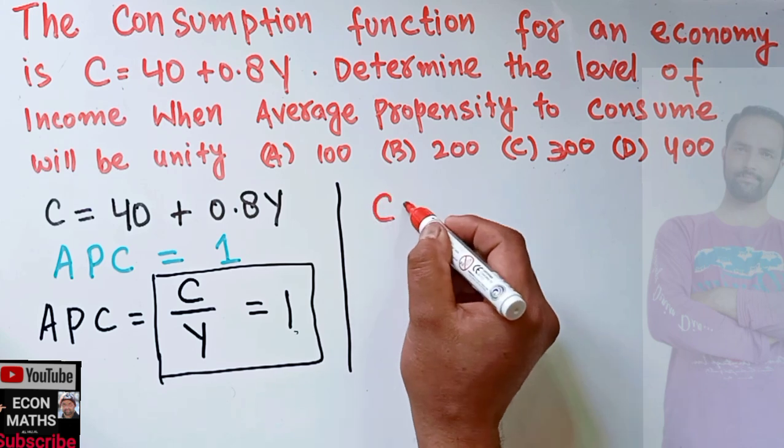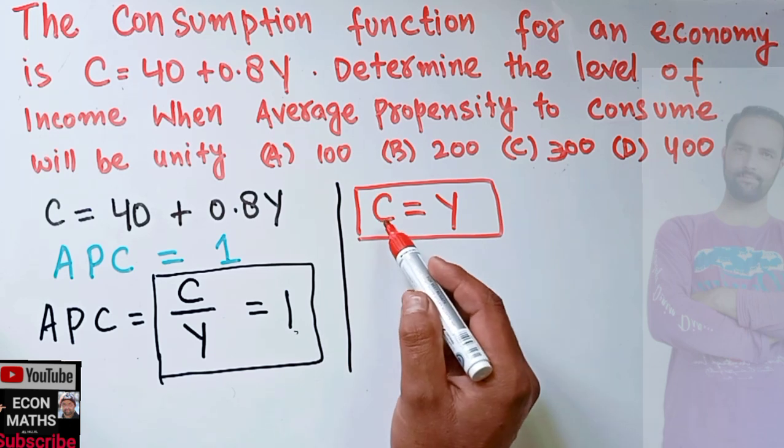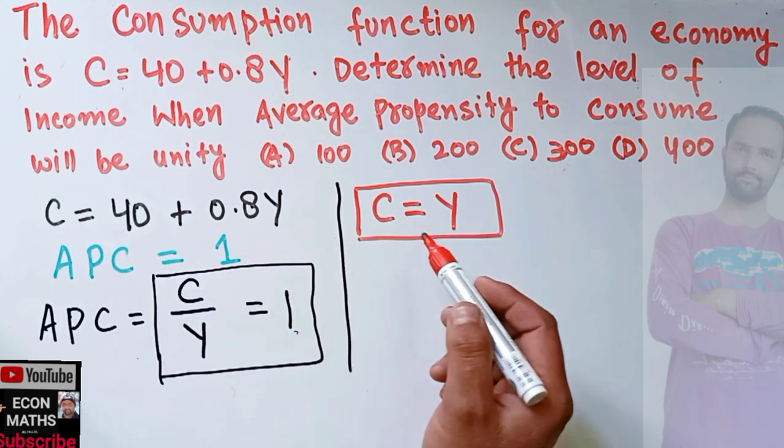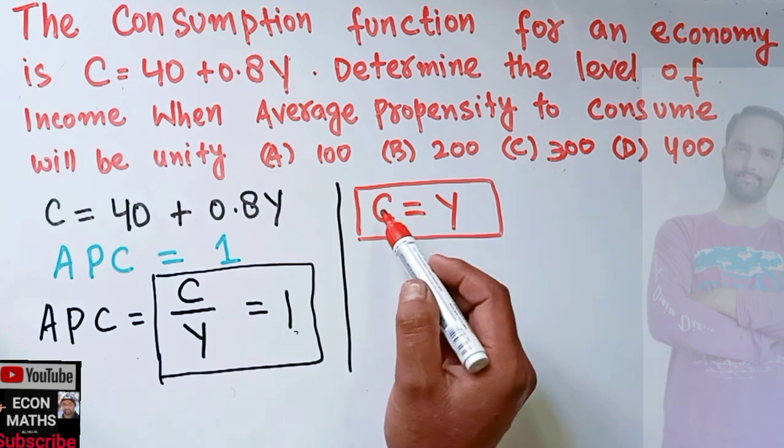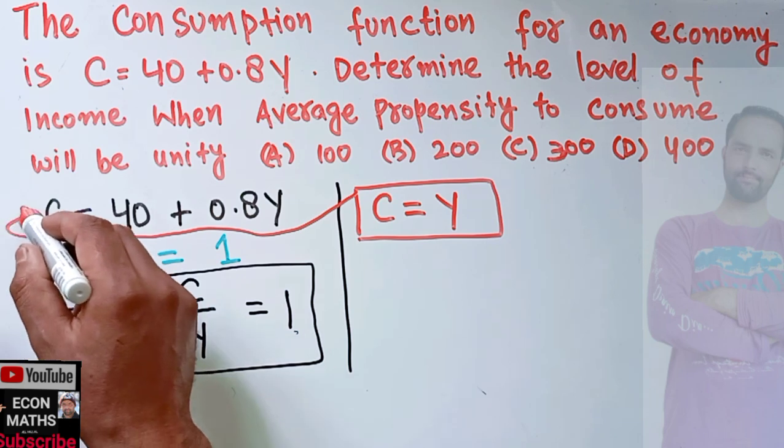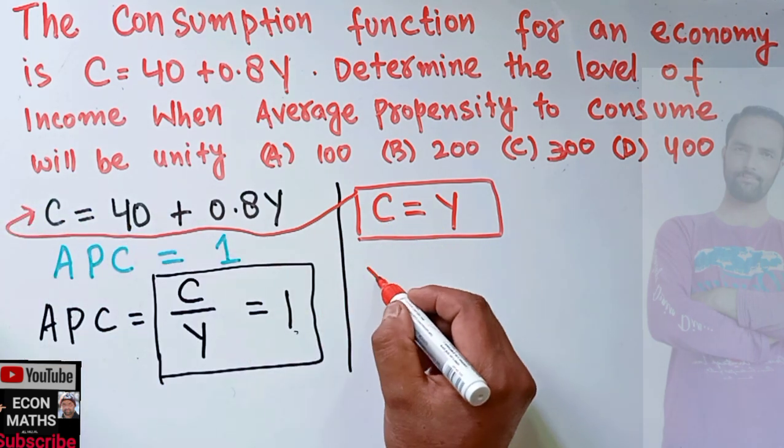When C = Y, let's plug the value of C = Y in this equation. So in place of C we write Y in this given consumption function. So Y will be equal to 40 + 0.8Y.